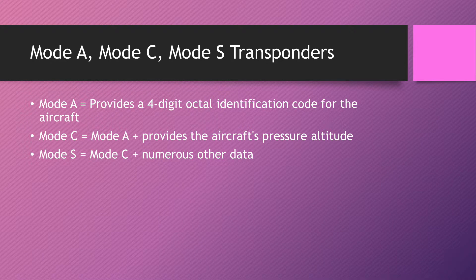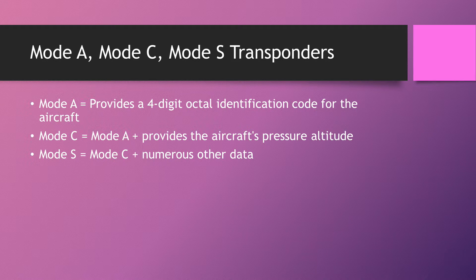The most basic transponder is a Mode A transponder — all it does is transmit the four-digit code that's set in the transponder. A transponder is a piece of equipment on the aircraft that sends a signal back to the ground. It has codes from 0000 to 7777. All codes are allocated to certain units and some have specific uses — for example, 7700 is the code for a general emergency and 7500 is a hijack. A Mode A transponder simply transmits that code back to the controller.